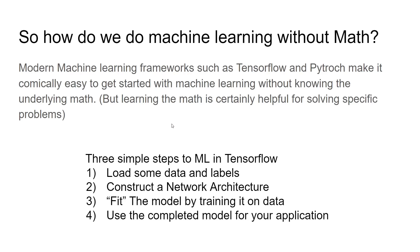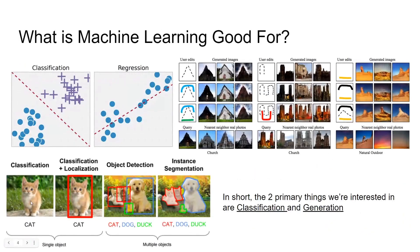All we have to focus on is picking our data and constructing the network architecture. You can use whatever data you want to operate on as long as there's some pattern or relation. The job of the network is to find out what that relation is between your data and the labels. If we feed a neural network random garbage like television static, it won't be able to classify anything meaningful. But as long as we're feeding it meaningful data — something that humans could classify — we'll probably see at least decent results.